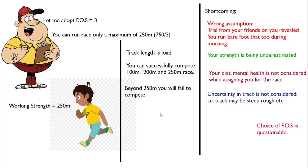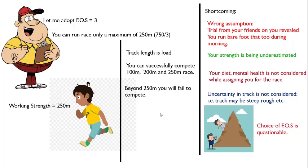Another shortcoming: uncertainty in track is not considered. Track length is the load, but what about uncertainty in track conditions? For example, if you are asked to run on a hilly road, a steep slope, or a rough terrain — that kind of uncertainty was not considered when assigning you a task of running 250 or 200 meters. Correlating this to concrete design, uncertainty in loads such as earthquake load and wind load was not considered in the working stress method of design.